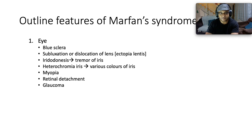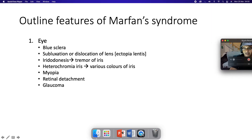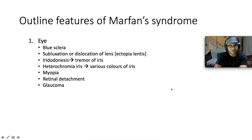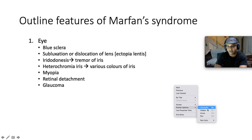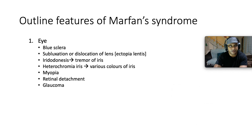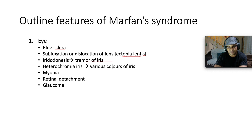In the eyes, patients may present with blue sclerae, subluxation or dislocation of the lens — which is what we call ectopia lentis — and we'll see how this compares with homocystinuria later on. Also iridodonesis, which refers to tremor of the iris; heterochromia iridis, which speaks to various colors of the iris; myopia as in our clinical case; retinal detachment; and eventually glaucoma.